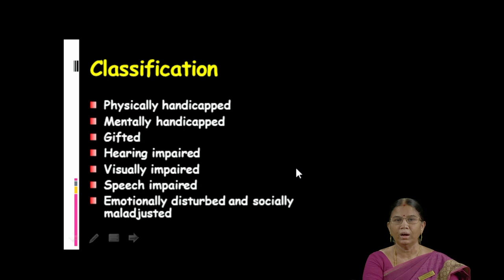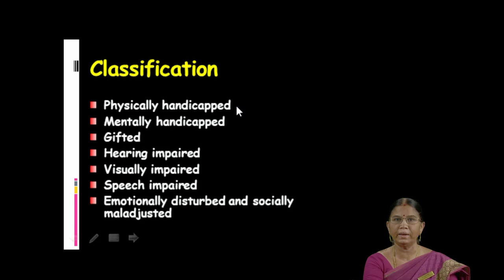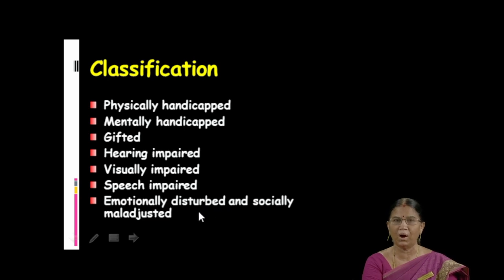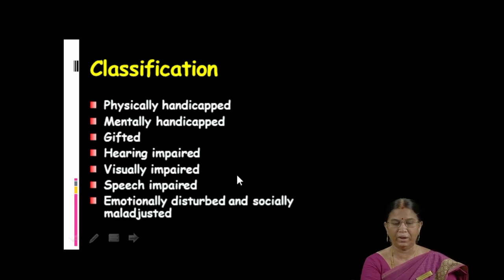Children with special needs are classified as: first, physically handicapped; second, mentally handicapped; then gifted, hearing impaired, visually impaired, speech impaired, emotionally disturbed, and socially maladjusted. In this way, children with special needs are classified.